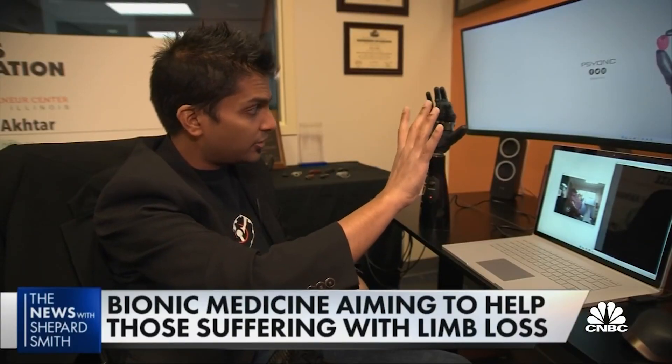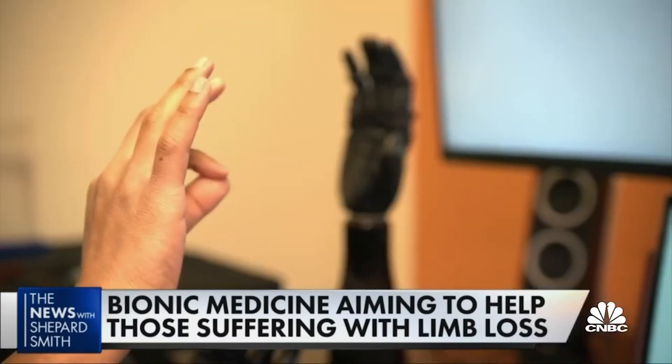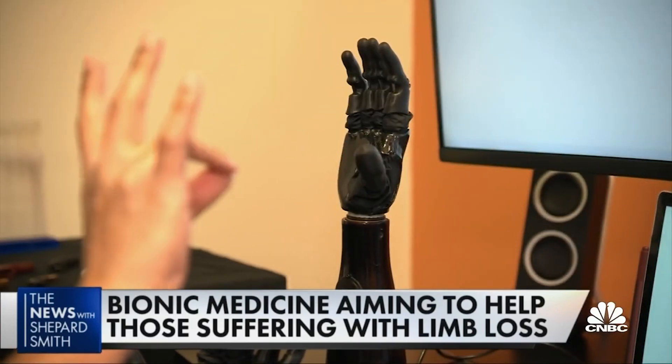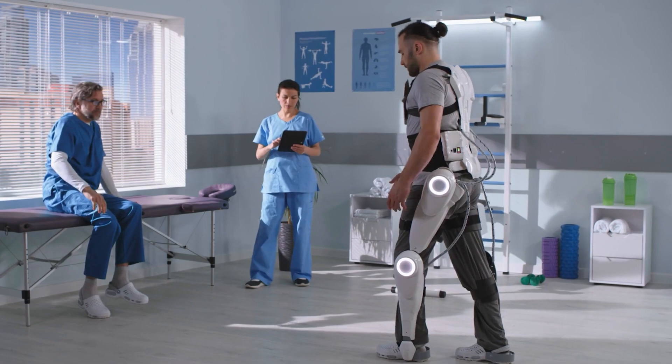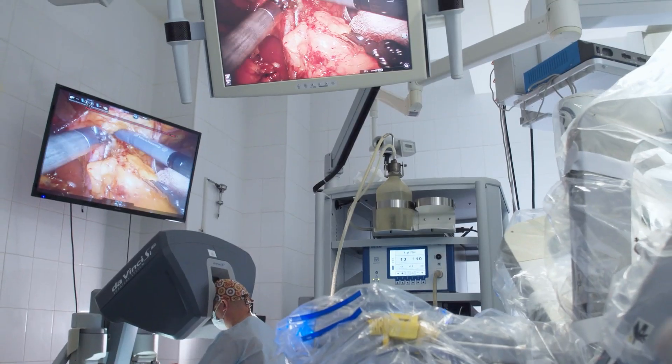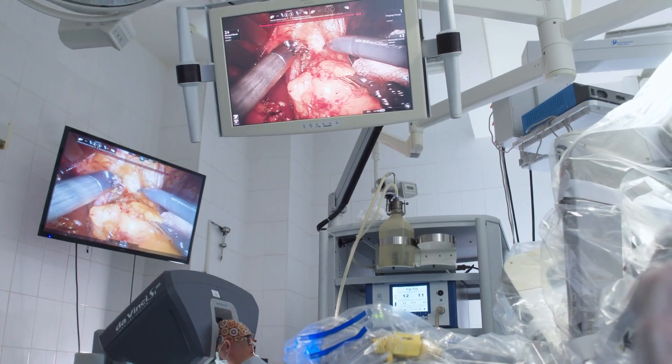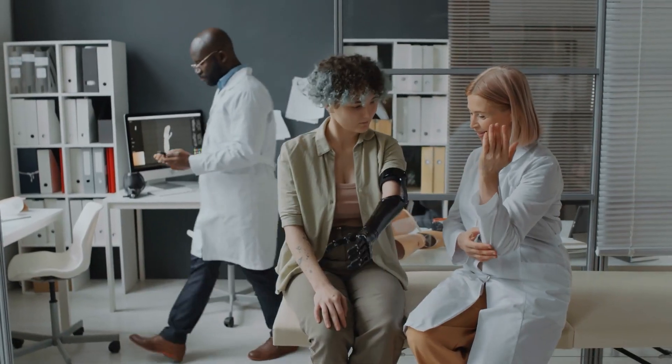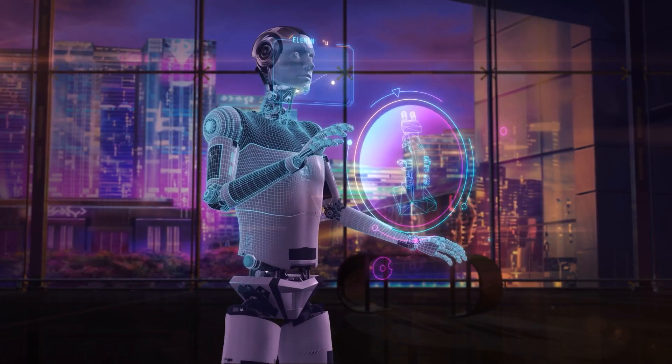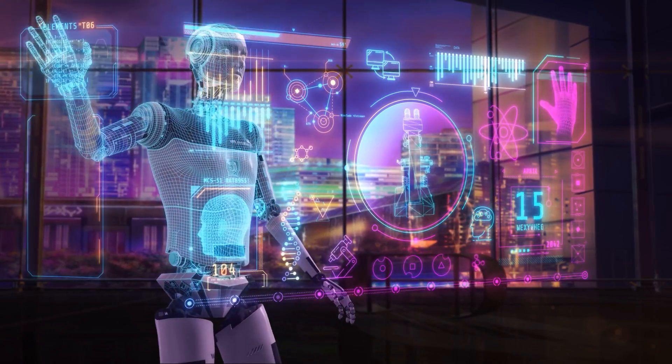A microchip hosting living brain cells now powers a machine that can learn and adapt like a biological organism. This breakthrough merges neuroscience with robotics, opening doors to revolutionary applications in medicine, technology, and beyond. But it also raises profound ethical questions we can't ignore.